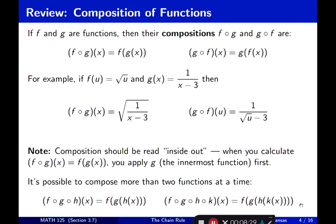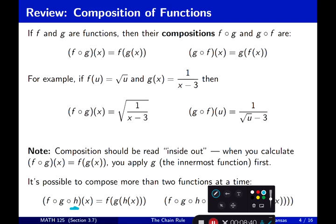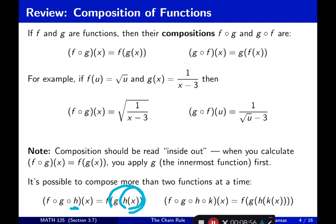For example, in this case the innermost is h — h acts on x. Then g acts on the output of h, and f acts on the output of g. So f(g(h(k(x)))) means k takes x as input first, then h acts on the output of k, and so on. Again, k is the one that takes x as input and its output feeds into the next function.